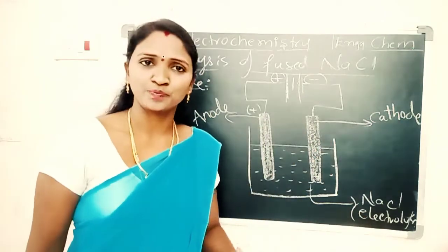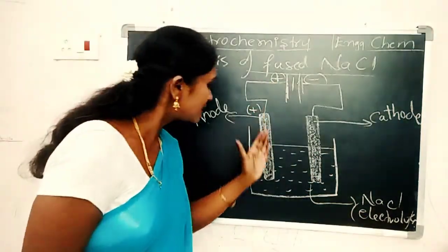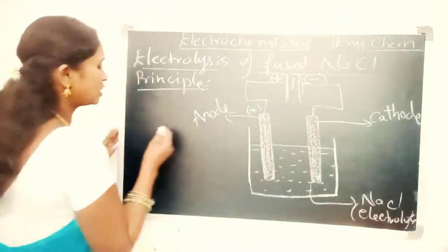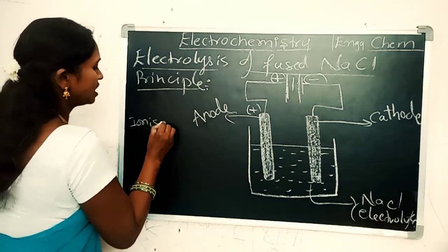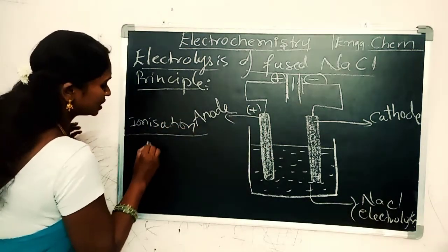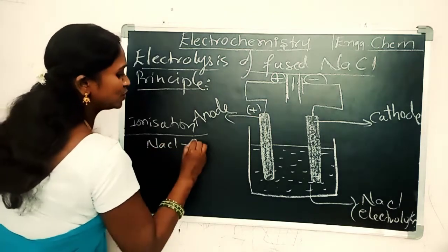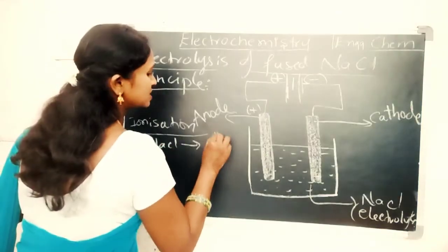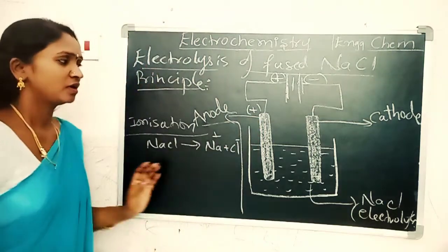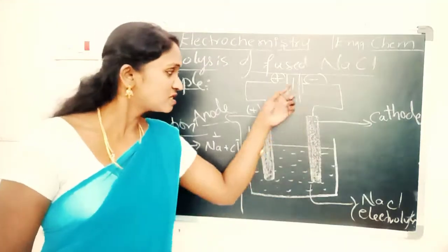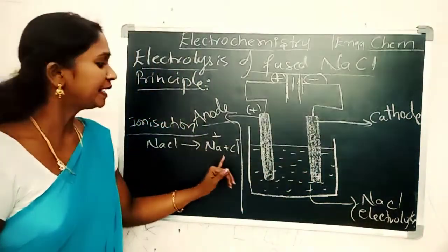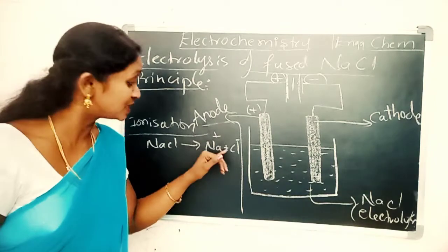When we pass electricity into the electrolyte, ionization starts. NaCl gives rise to Na⁺ ions and Cl⁻ ions. The sodium chloride is ionized — this is called dissociation.